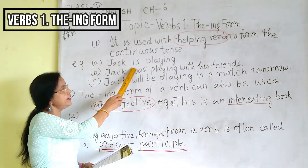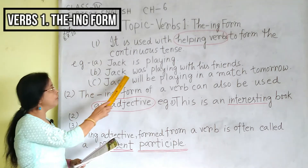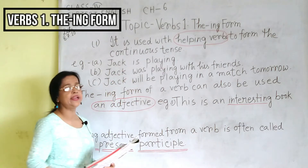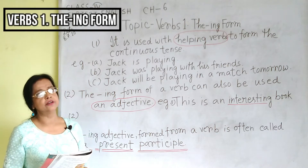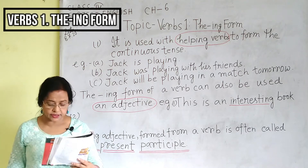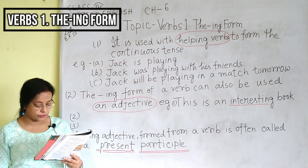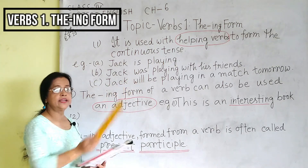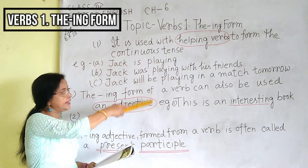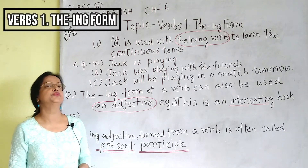In sentence (a), the helping verb 'is' has been used. In (b), 'was' has been used as the helping verb. In (c), 'will be' is used as the helping verb. What is important to note in all three sentences is that the form of the main verb — 'playing' — remains unchanged in all three sentences.